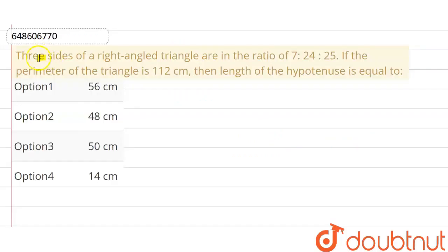Hello guys, the question is: Three sides of a right angle triangle are in ratio 7:24:25. If the perimeter of the triangle is 112 cm,